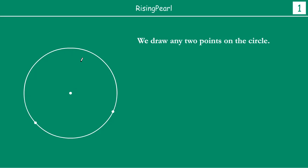Now, what we do is we have drawn a circle with center uppercase O. This is our center of the circle. We have drawn two arbitrary points on the circle — let's say this is point A and this is point B. When we draw two points on a circle, it divides the circle into two parts: this part A-B, and then you have this other part B-A.